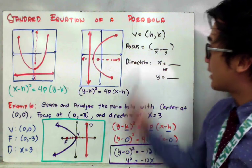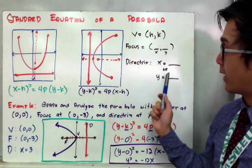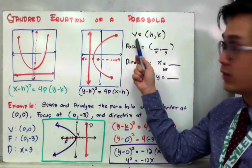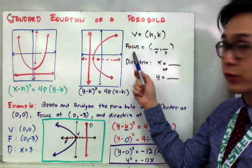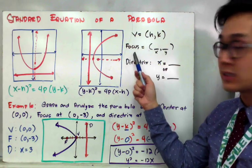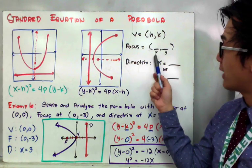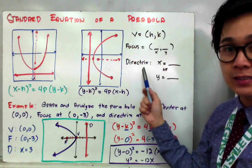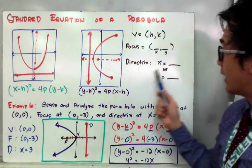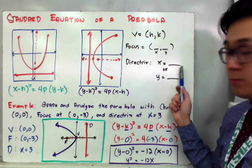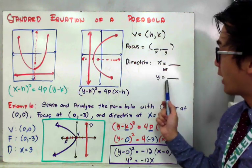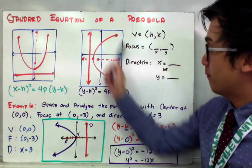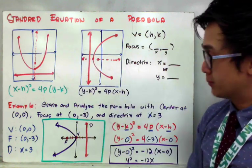These are the notations we will use: for the vertex, it's given by the point (h, k); for your focus, it's given by the point (x, y); and for the directrix, since it's a line, it could either be x equal to a number or y equal to a number, depending on our parabola. Let's have our first example.